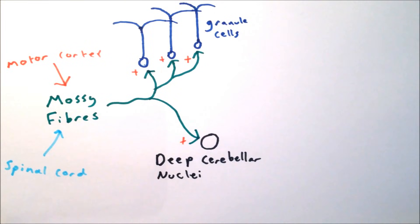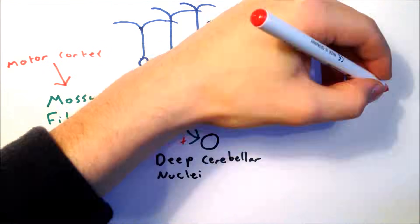These provide input to the granule cells and are thought to encode information about voluntary limb movements. Mossy fibers project diffusely to a large number of granule cells in the same plane.